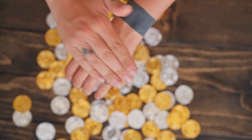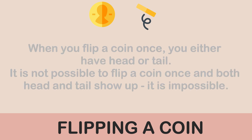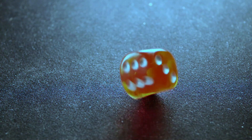To explain mutually exclusive events, consider the experiment of flipping a coin just once. The outcome is either head or tail. You can never flip a coin once and have head and tail at the same time — that is never possible. So flipping a coin just once is a mutually exclusive event.